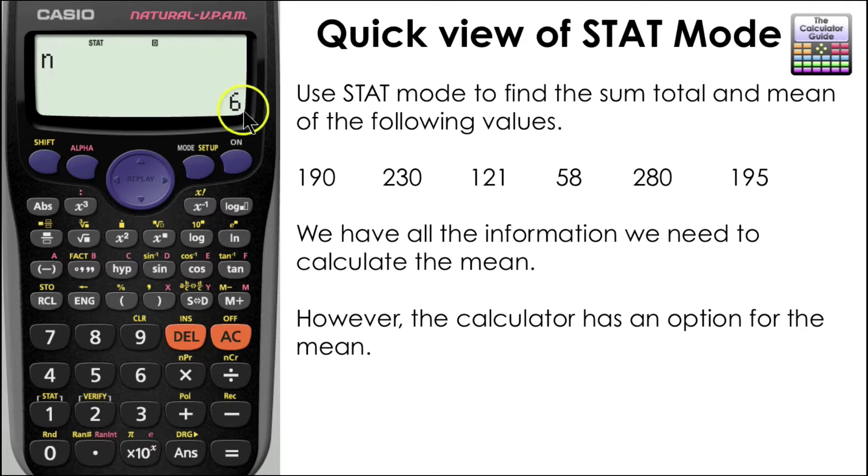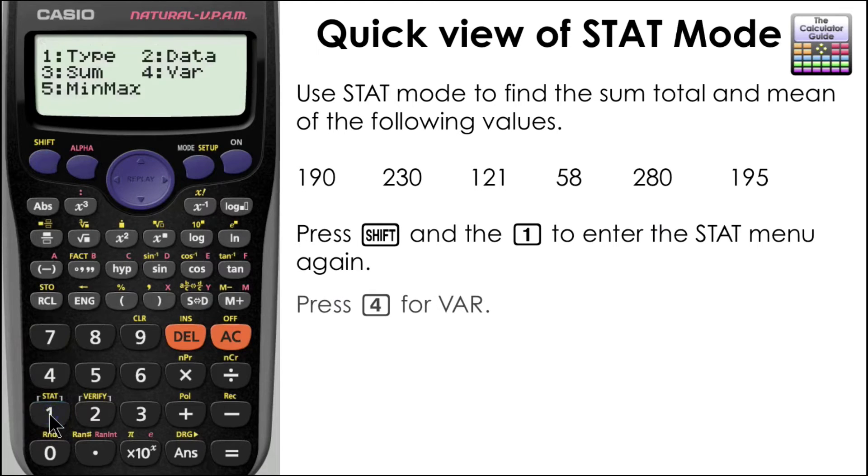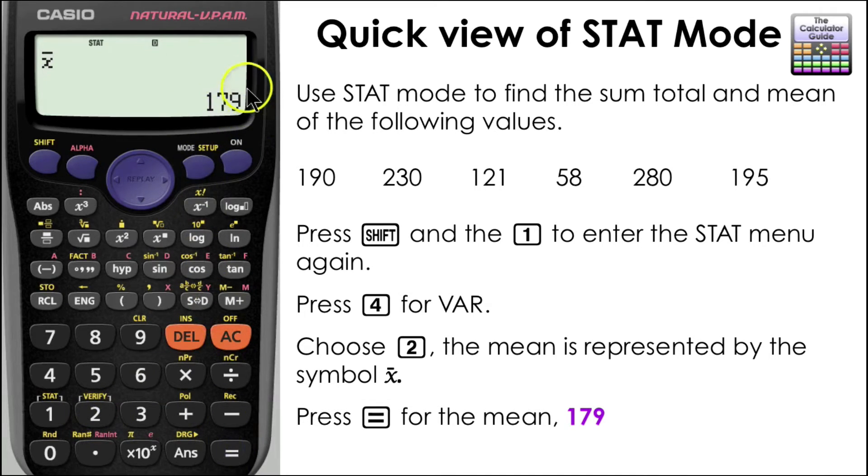So essentially we have all the information that we need to calculate the mean, the total sum of the values and the number of values. But the calculator can do this for us, it has a mean function. So if we go back into the STAT menu and press 4 for VAR, and then choose 2, the mean is represented by the symbol x bar. So you just need to have a look out for that one. So if you choose that one and press equals, then that will show our mean. So our mean is 179.